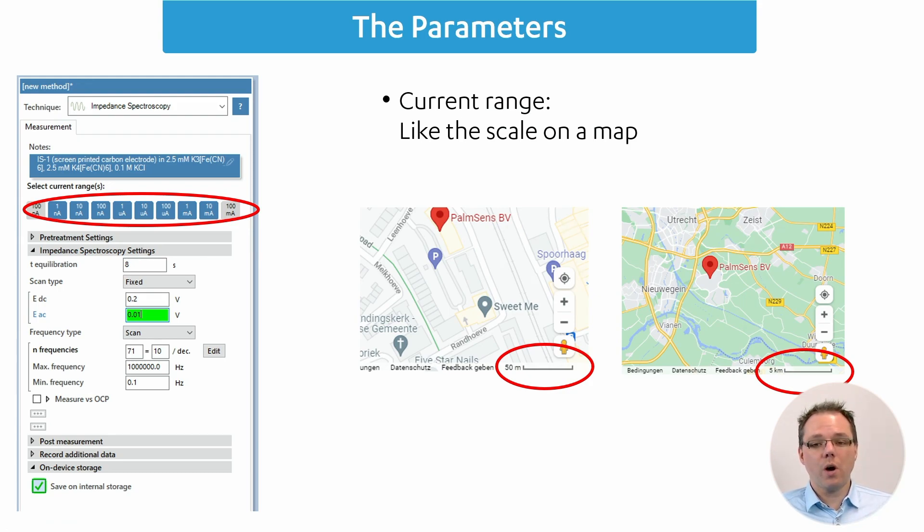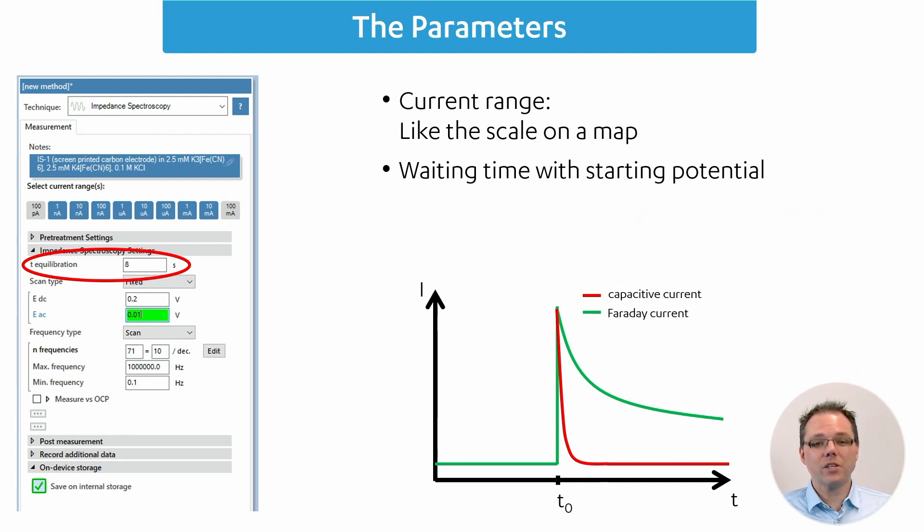And this is how your current ranges work. If you put too high a current range, your resolution for low currents will get worse. And if you put too low a current range, you will cut off higher currents because you cannot measure them anymore.